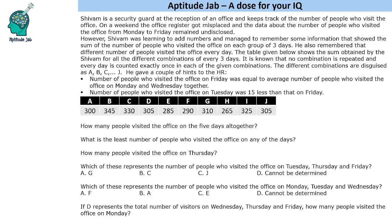Welcome to Aptitude. The problem says that Shivam is a security guard at the reception of an office and he keeps track of the number of people who visited the office in a register. On a weekend, the office register got misplaced and the number of visitors is not known. This person was learning to add numbers and he remembered some information that showed the sum of the number of people who visited the office on each group of three days.